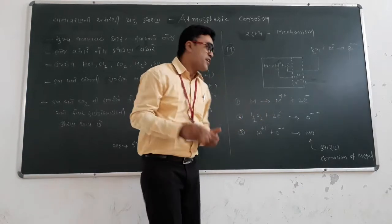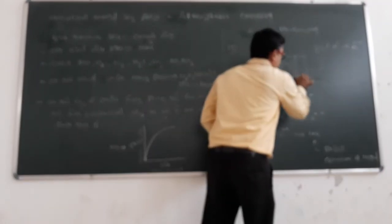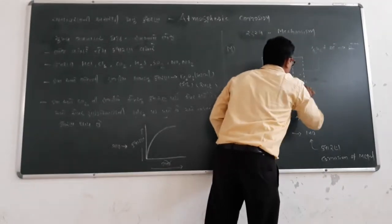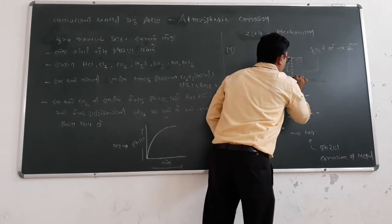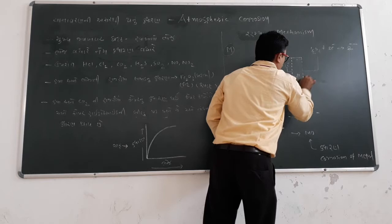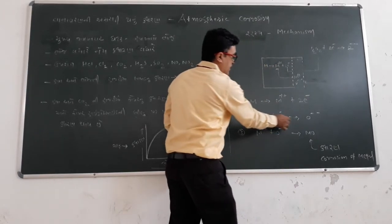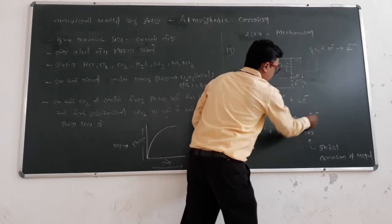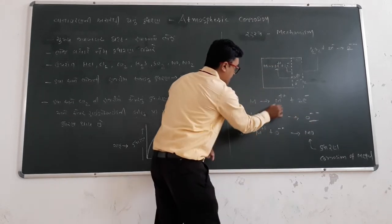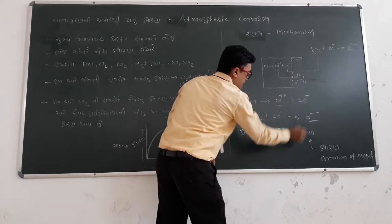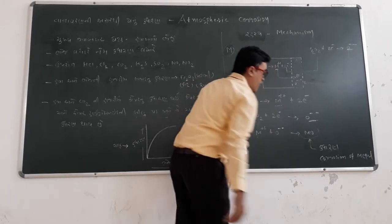M+2 and O-2 combine to form MO. MO is nothing but the oxide of metal, which is the corrosion of metal.